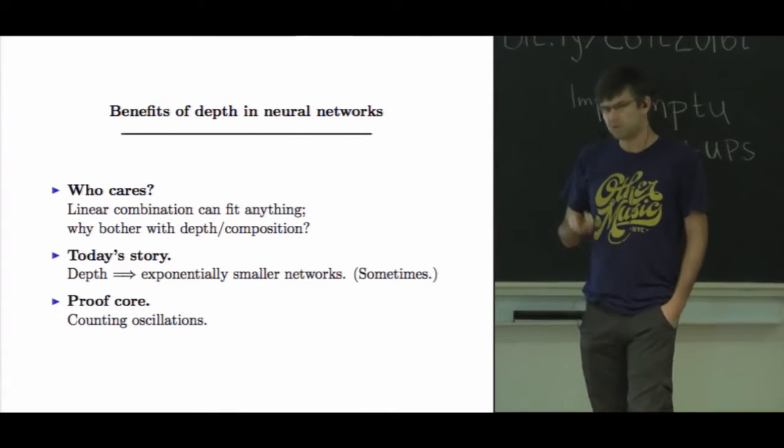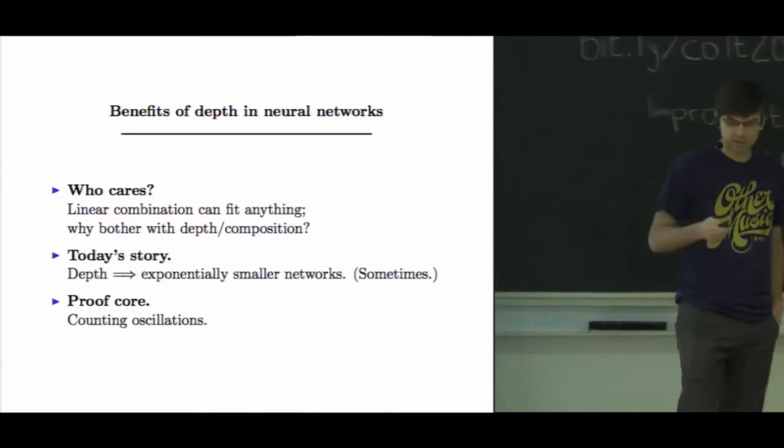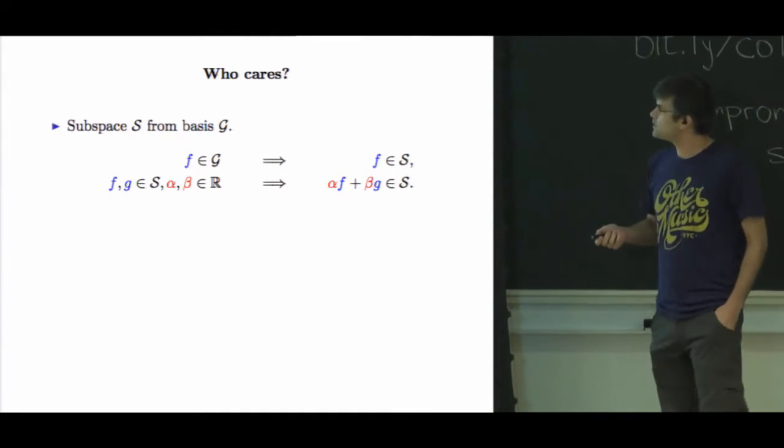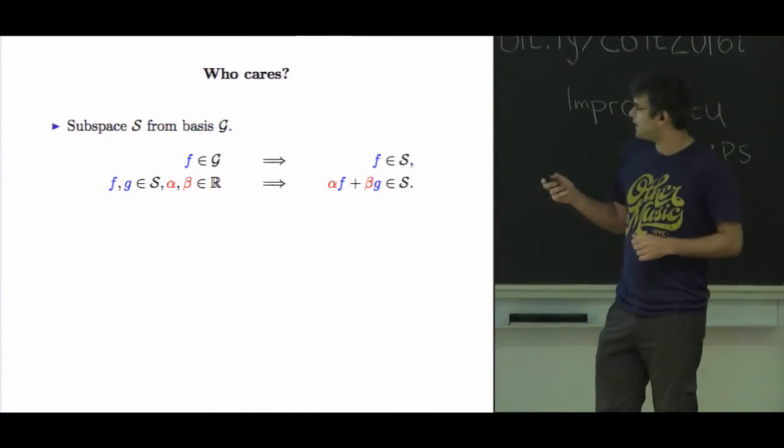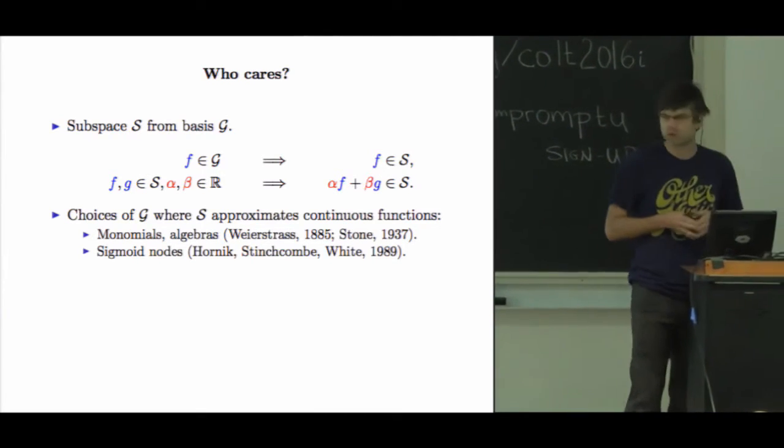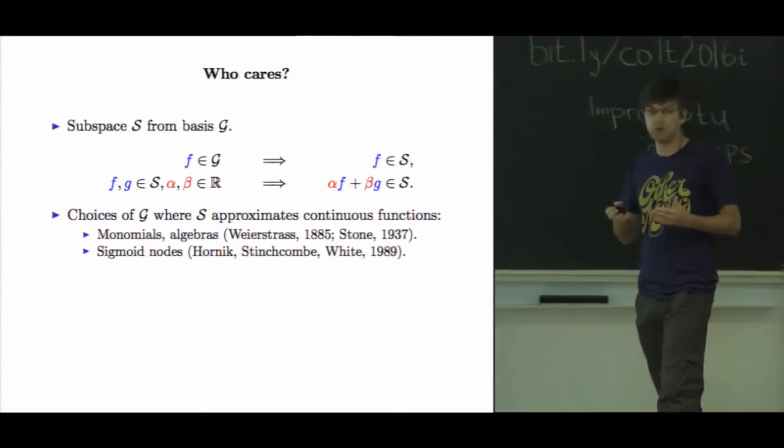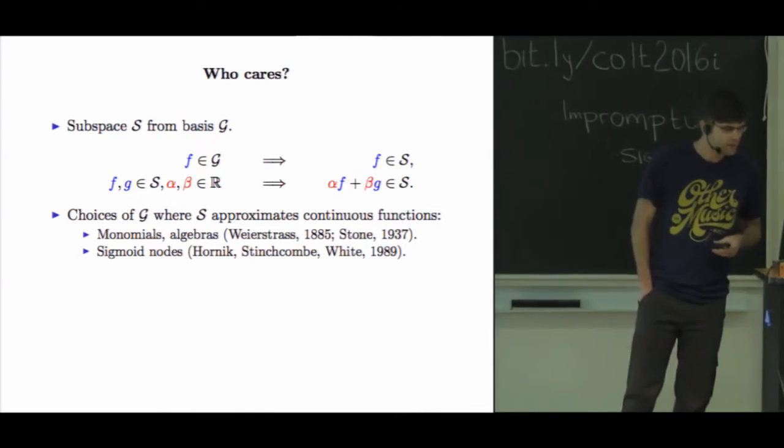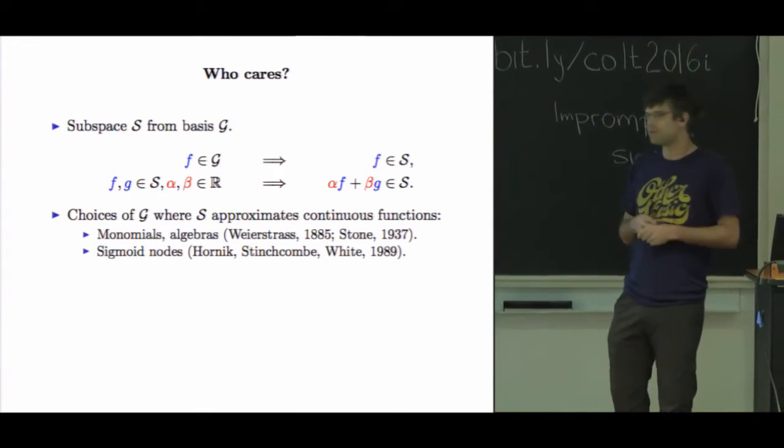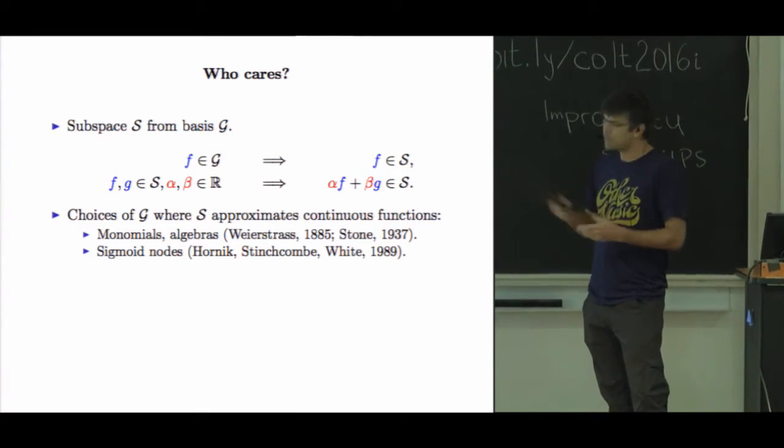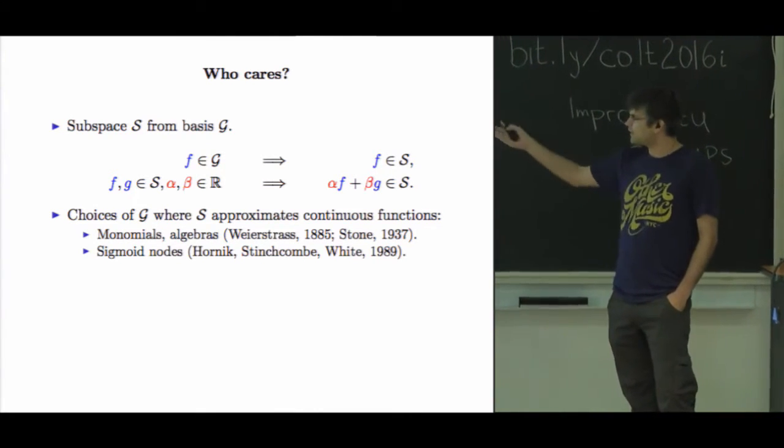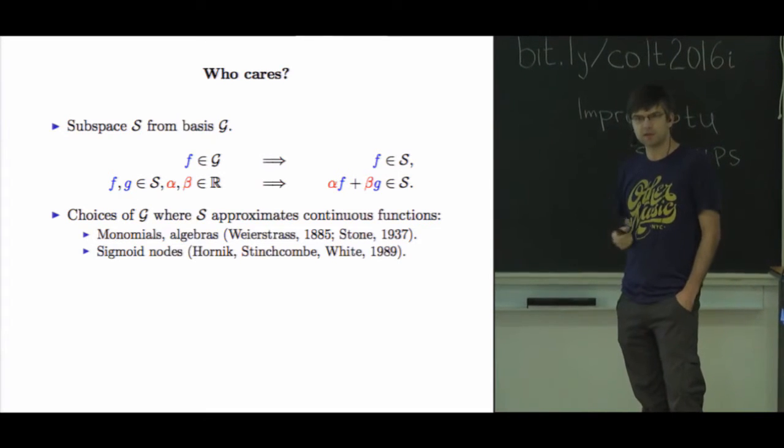So here's one way to describe a subspace based on some basis set G. For a long time people wanted to analyze how expressive these are. For instance, if we have our basis be monomials, so products of primitive variables, then it's been known by Weierstrass from 1885 that these are dense in continuous functions. Stone then generalized this, and you can use this theorem to prove kind of quickly and nicely that shallow neural networks can fit any continuous function as well.